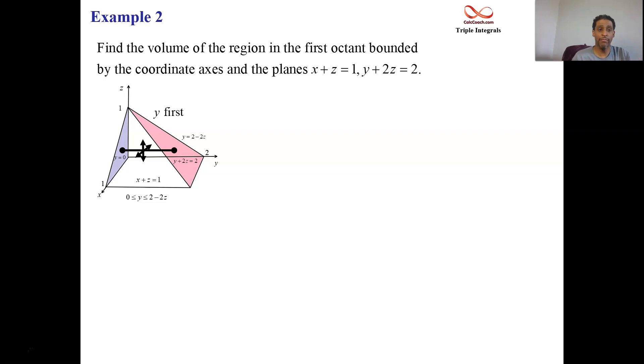And so when we go and make this slice in y, if we decide to do y first, the lowest y is y equals zero. And the highest y is y equals two minus two z solving for it in the plane y plus two z equals two. Okay, well, that's great. And it doesn't change. We've seen it on another slide. So we can keep it like that. Integrate out y first.